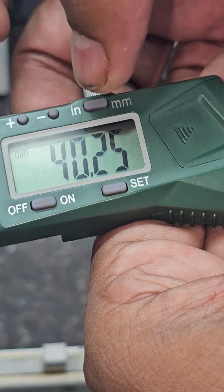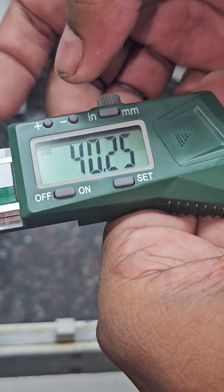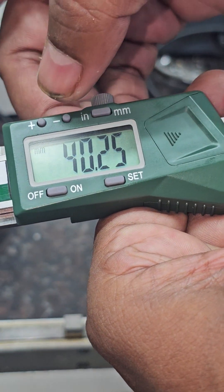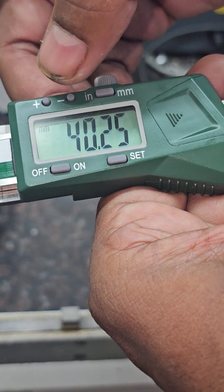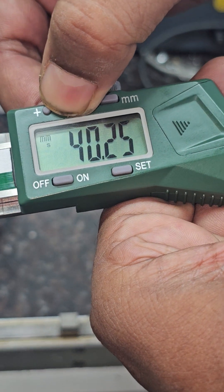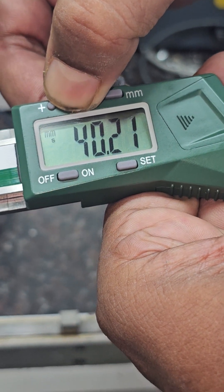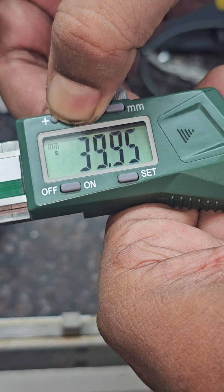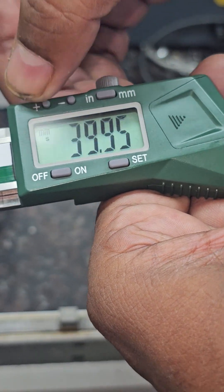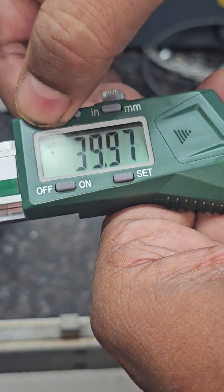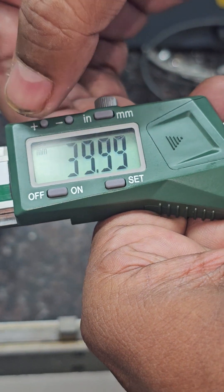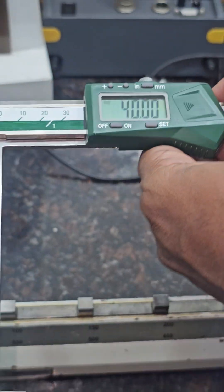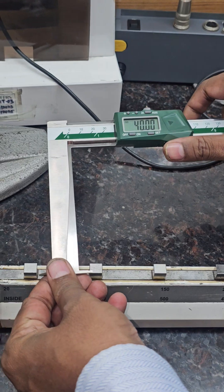Now 40.25. We require 40, so we are pressing minus key. Now 40 is showing on display. We are again checking using the locking screw.